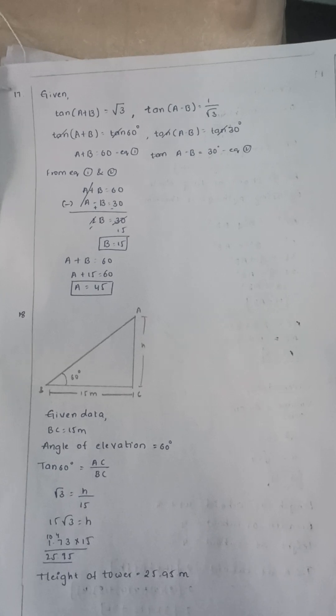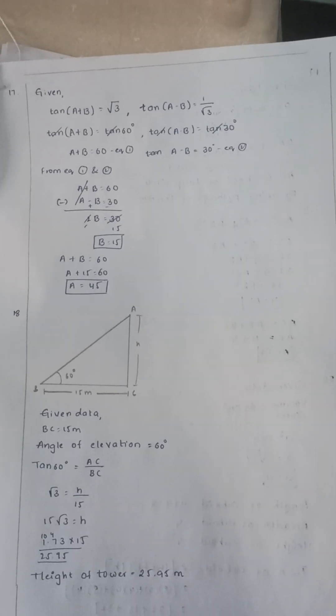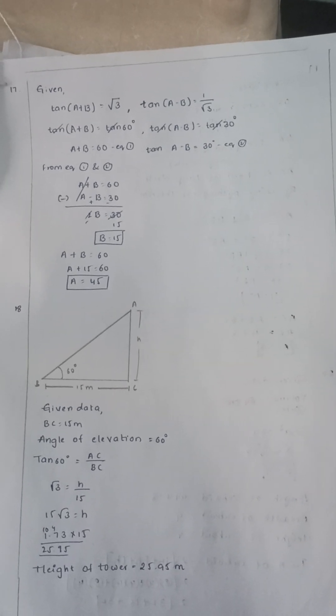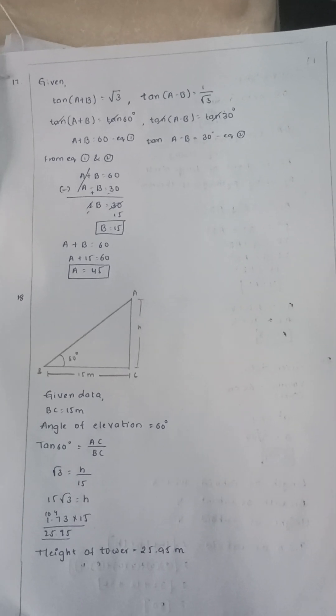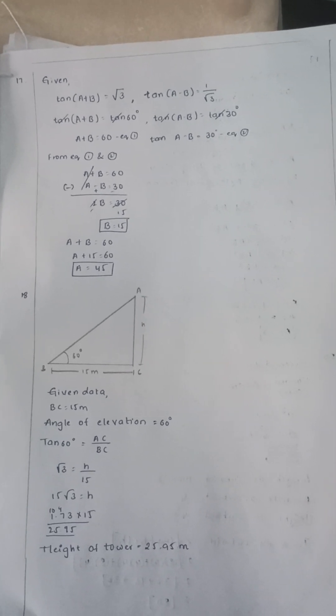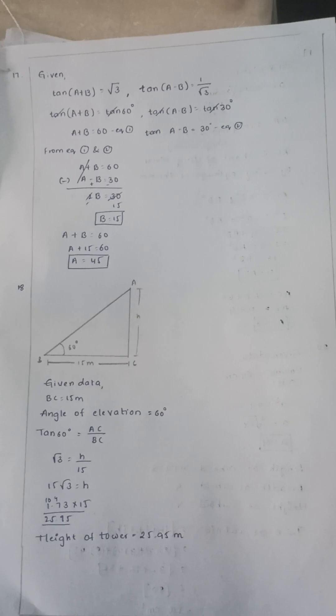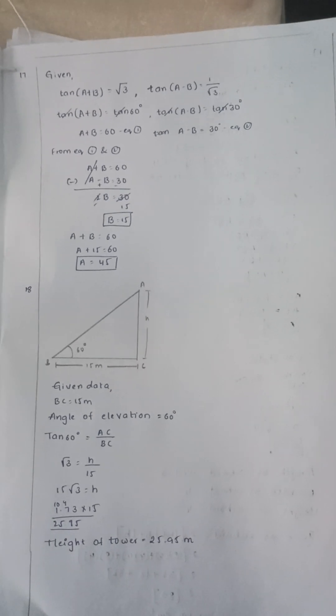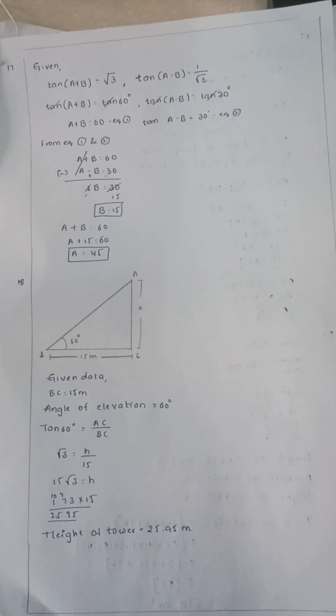Seventeenth question: tan(A + B) = √3 and tan(A − B) = 1/√3. When simplified, the value of A is 45° and the value of B is 15°.